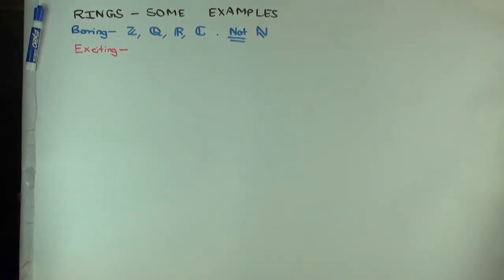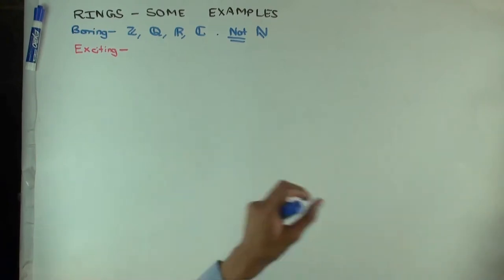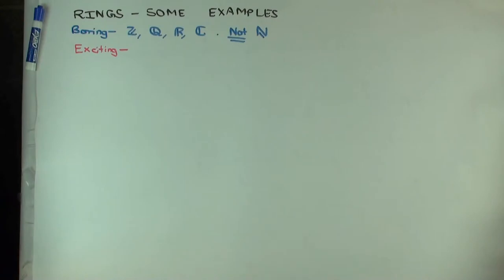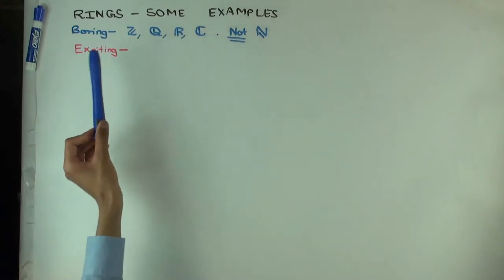Why not? They don't have additive inverses. One part of the ring definition is that there should be additive inverses. So the natural numbers are not a ring. There's something called the rig — the ring without negatives — they remove the 'n' from ring and call it rig, but that's not directly relevant here.